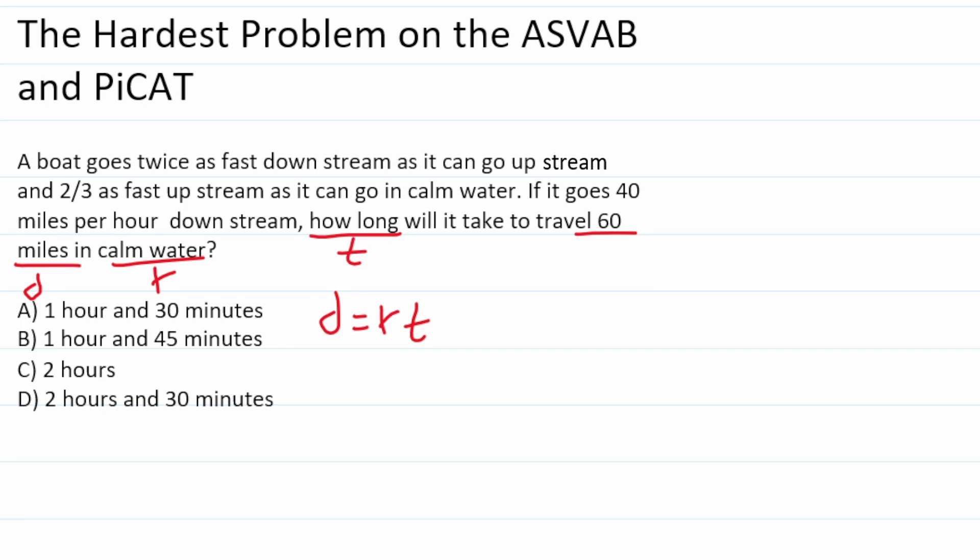In order to figure out the rate of the boat in calm water we're going to have to work backwards here. We're given information about the boat as it travels downstream, which I'm going to call DS, upstream which I'm going to call US, and in calm water which I'm going to call C.